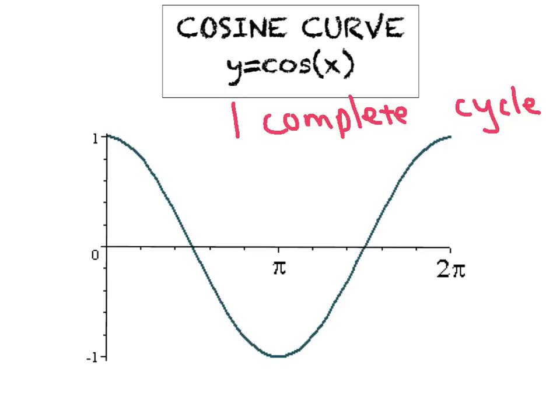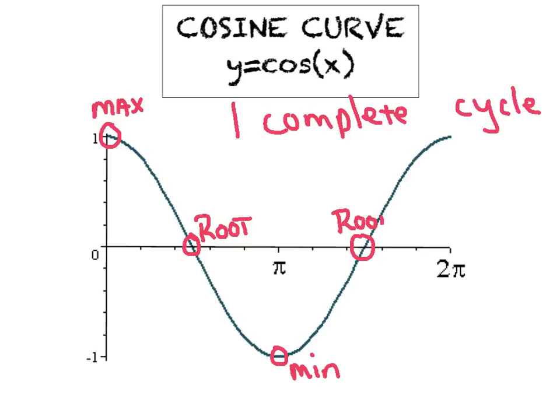Here's the key difference: instead of starting with a root like sine did, cosine starts with a max. Then it goes to root number one, down to its min, up to root number two, and finishes with max number two. So we've got max, root, min, root, max — and it kind of looks like a cereal bowl. I remember it because cosine starts with C and cereal starts with C, and this is the one curve you could theoretically eat cereal out of.